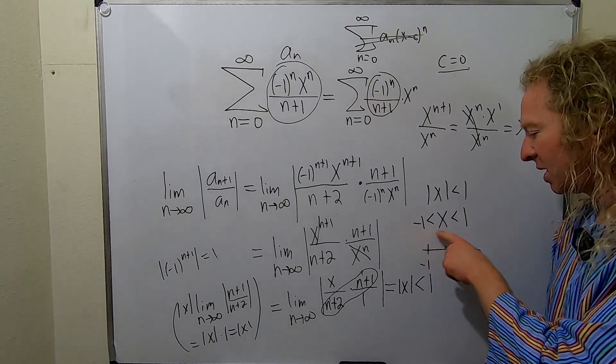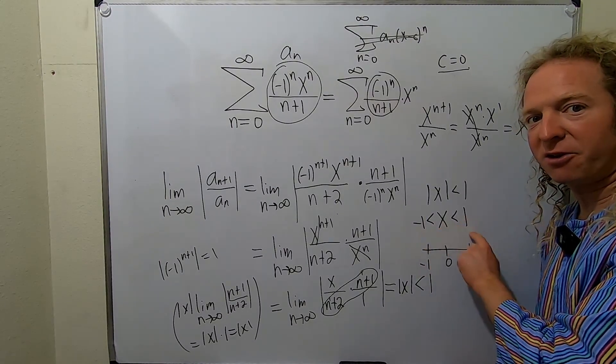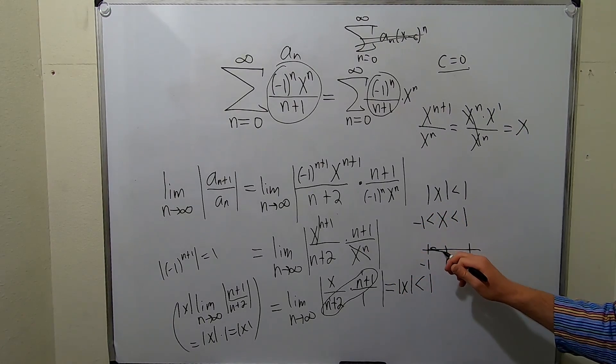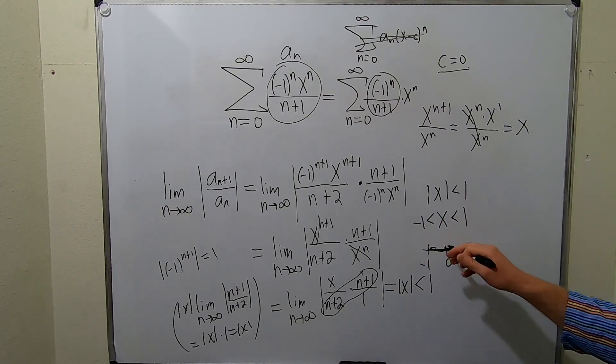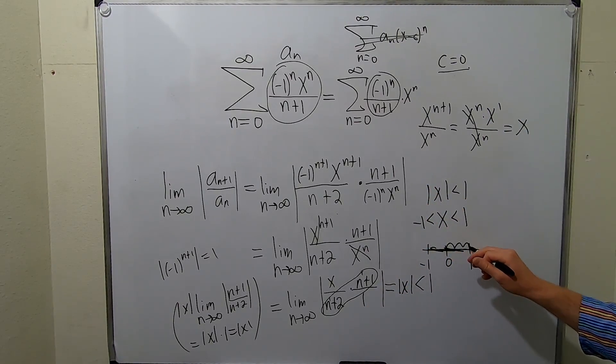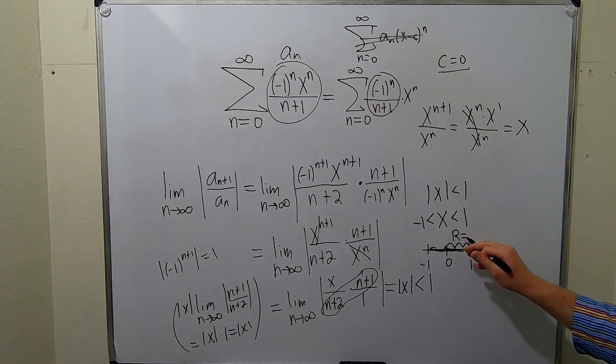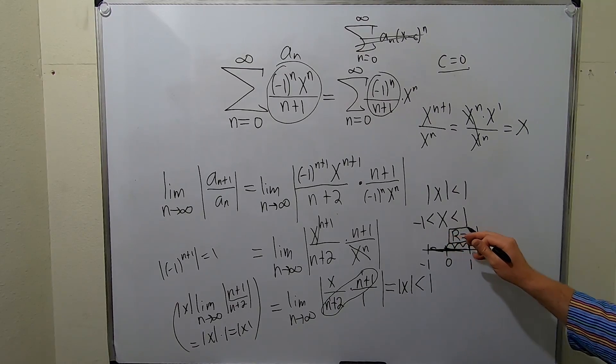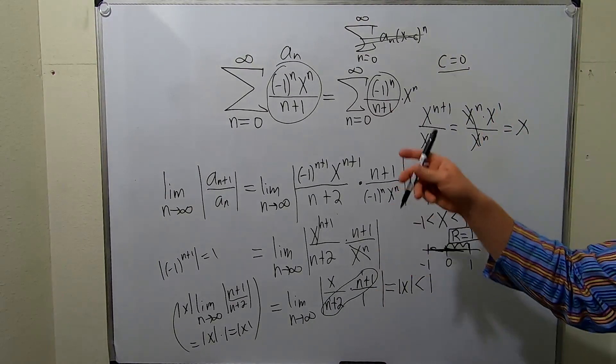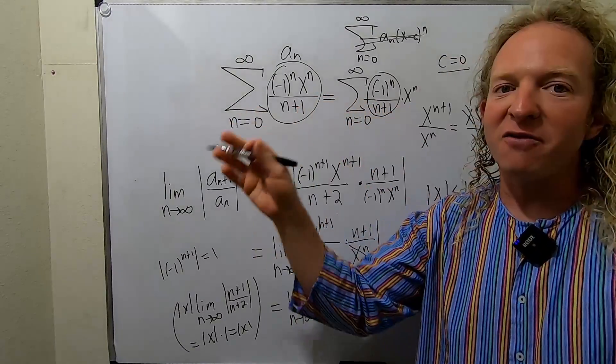We don't know what happens at the endpoints. We don't know if it converges there or diverges there. All we know is it's going to converge in here for sure. We want the radius of convergence. So from the picture you can see that the radius is just this distance here and it's equal to one.